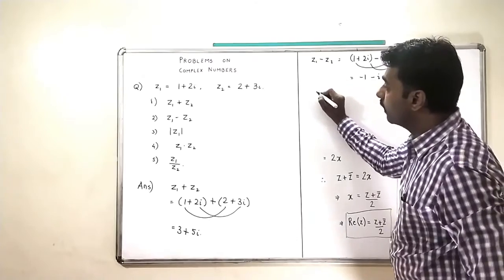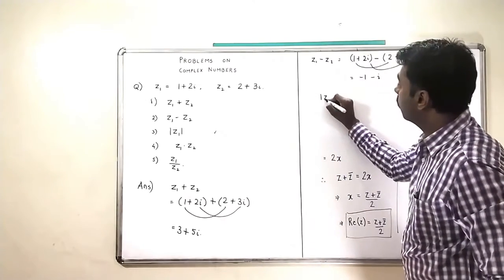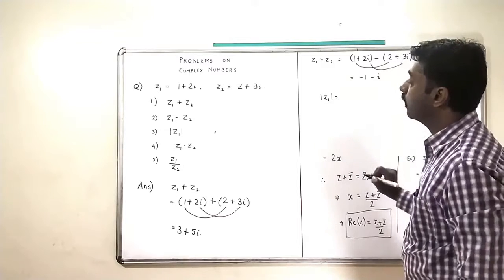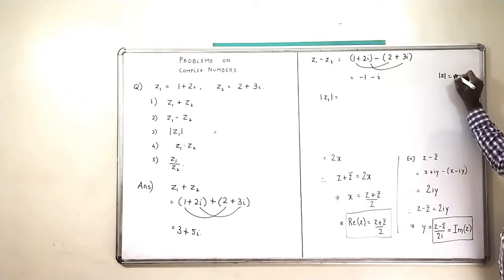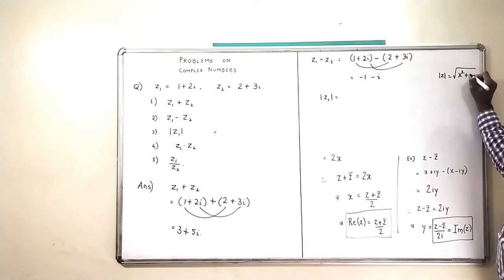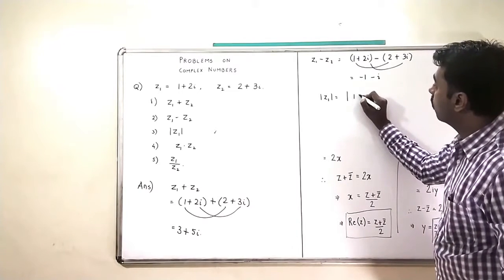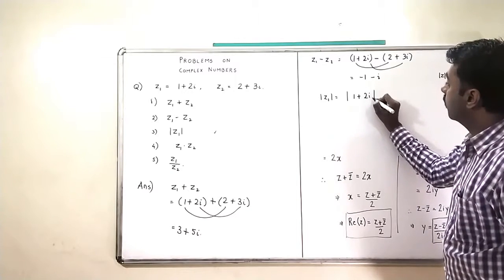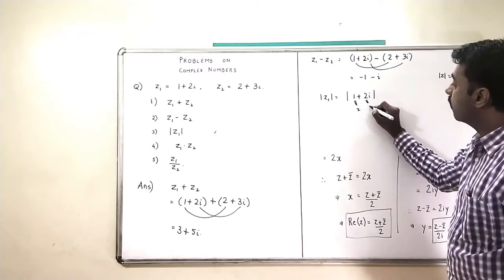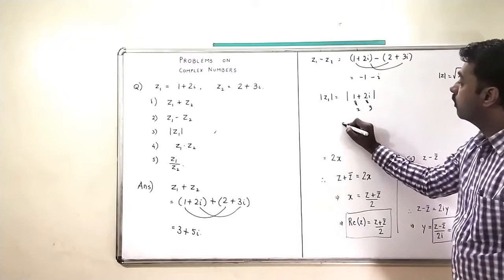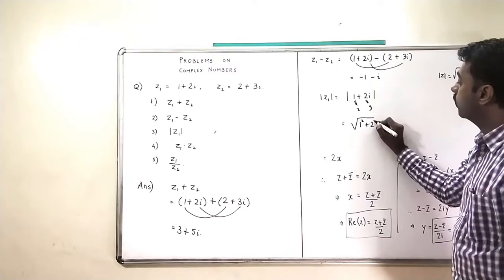The third part is mod Z1. Mod Z1 is nothing but — we know what is mod of Z. Mod of Z is given by the formula square root of X squared plus Y squared. So what is the mod of 1 plus 2i? This is X equal to 1, and Y is 2, so this will become square root of 1 squared plus 2 squared.